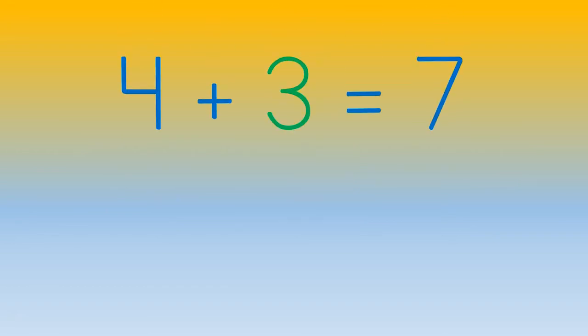So, 4 plus 3 equals 7. 7 minus 4 equals 3.